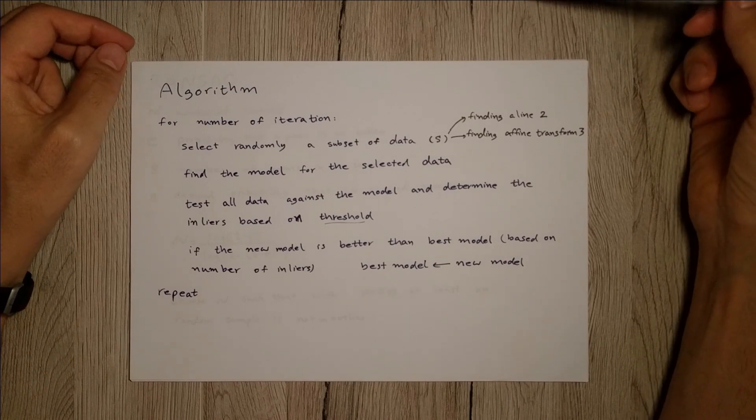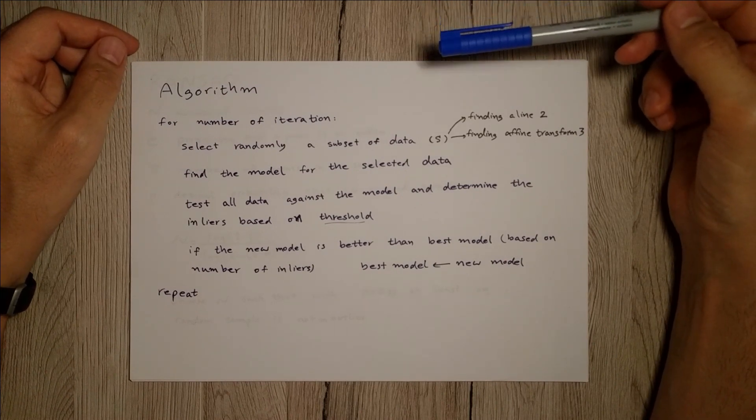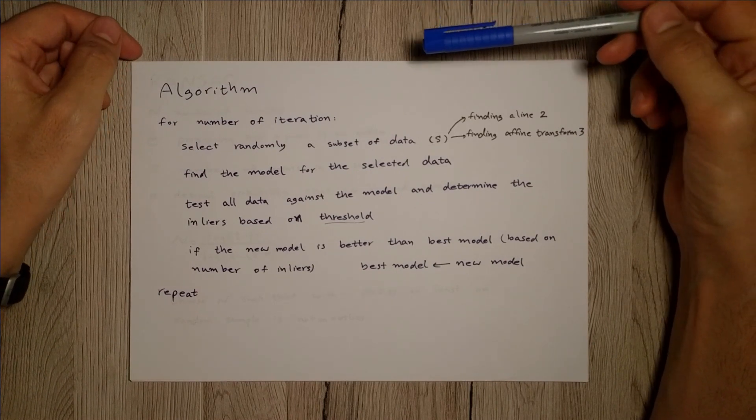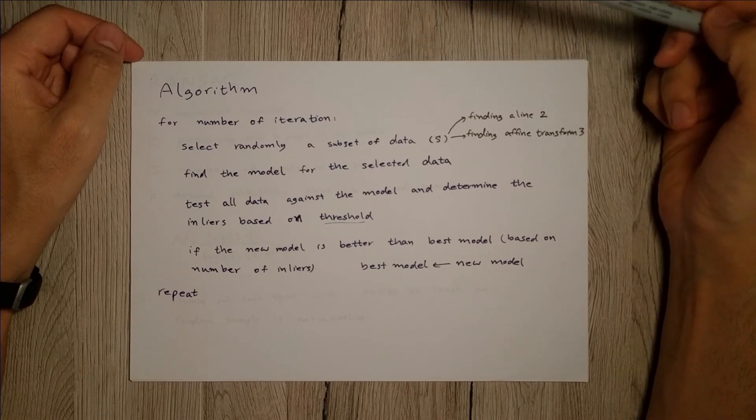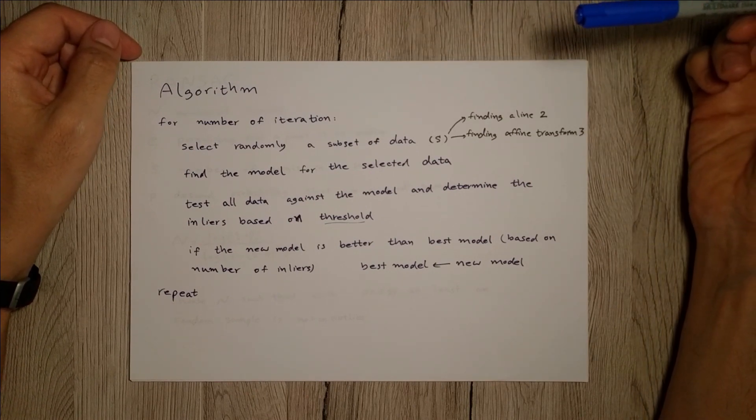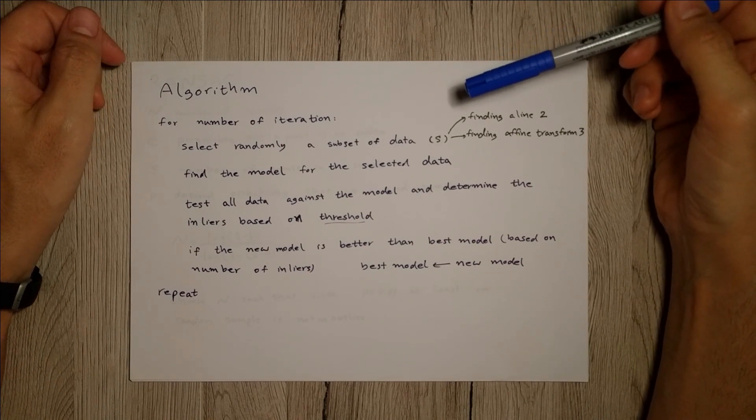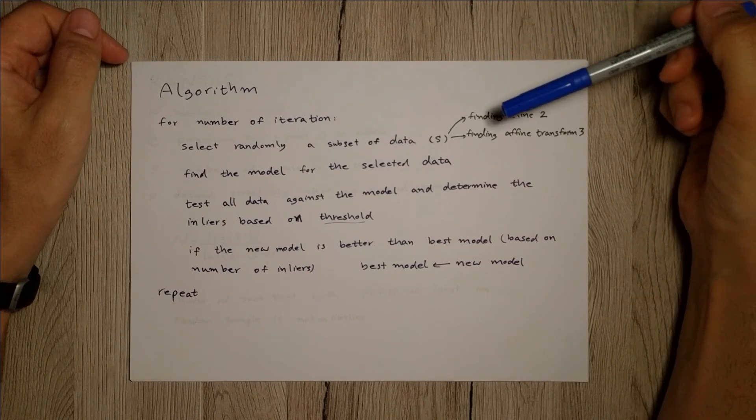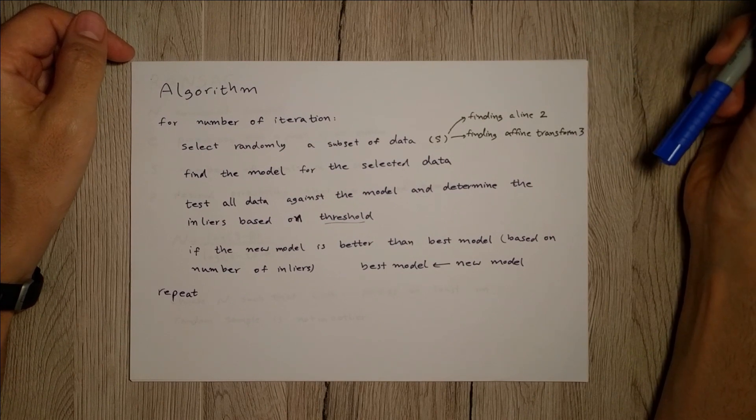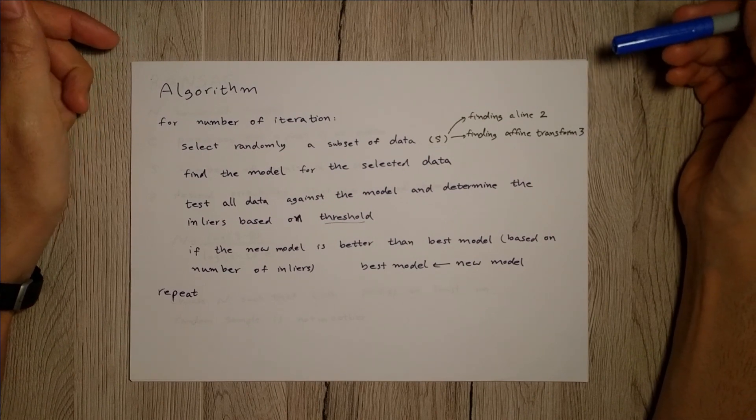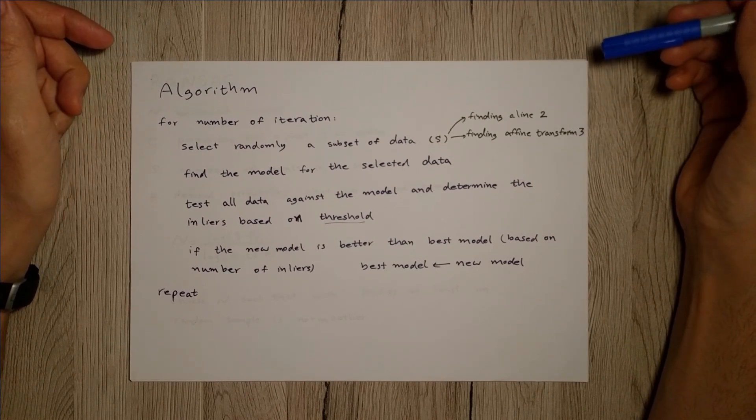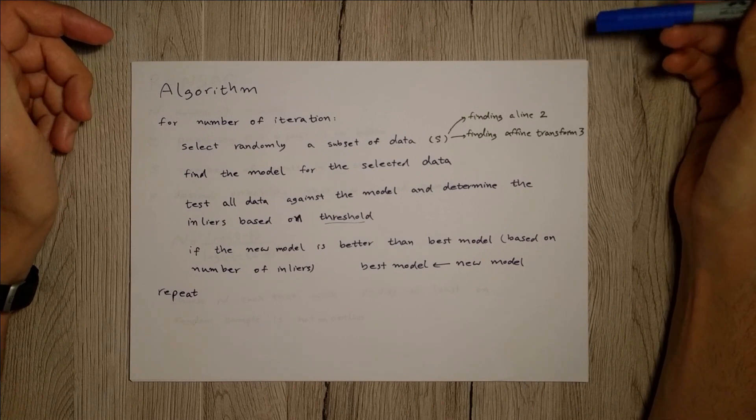In RANSAC algorithm, for a given number of iterations, we randomly select a subset of data which I denoted by S. So for instance, if we have a set of points and we want to fit a line, then you know that you need two points.